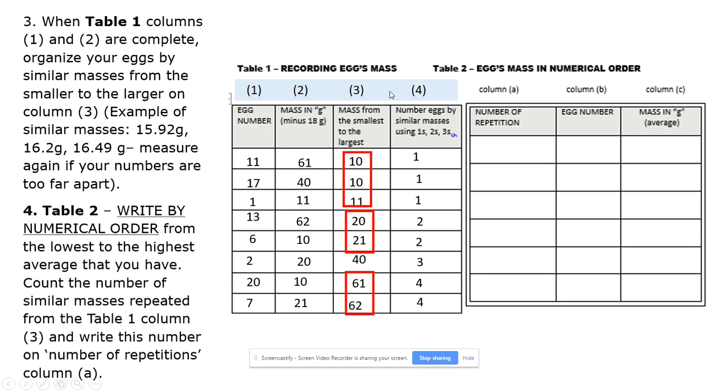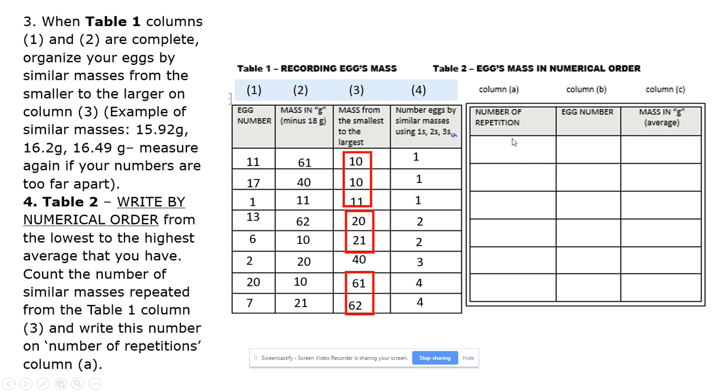In table 2, you are going to number the repetition in column A. You are going to write down the number of repetitions. There are 3 numbers, so there are 3 repetitions. Then, you are going to record the egg numbers. The first 10 is 6, the second 10 is 20, and the mass number 11 is grouped with 1. And record those in column B of table 2.